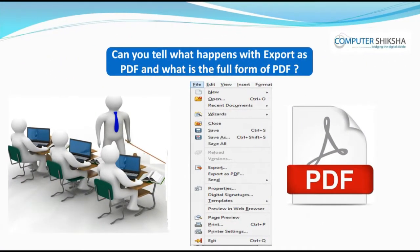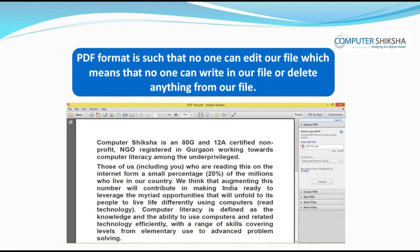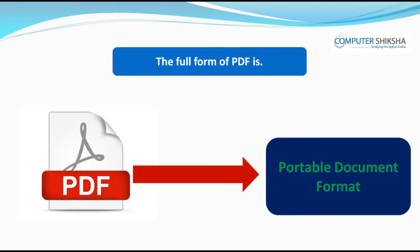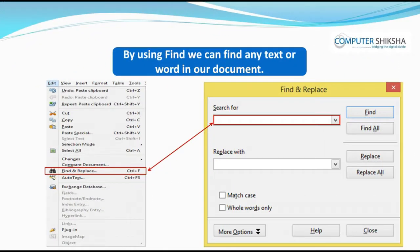Can you tell what happens with Export as PDF and what is the full form of PDF? By using Export as PDF, you can convert your Writer file to PDF format. PDF format is such that no one can edit our file — no one can write in or delete anything from our file. Such a file can only be read, and the full form of PDF is Portable Document Format. By using Find, we can find any text or word in our document, and by using Replace, we can then change the same.